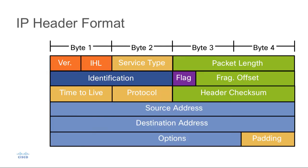Traffic that is passed down the protocol stack receives a header, and the header contains information relevant to that layer, used for providing service to the layer above. It's important to understand the IP header format because attackers can manipulate those fields in an IP header and use that as an attack vector. So as an analyst, you certainly want to be familiar with the different fields inside of an IP header. In this graphic, we see an IP header with a number of different fields, and we'll go through each of these fields explaining what they do.